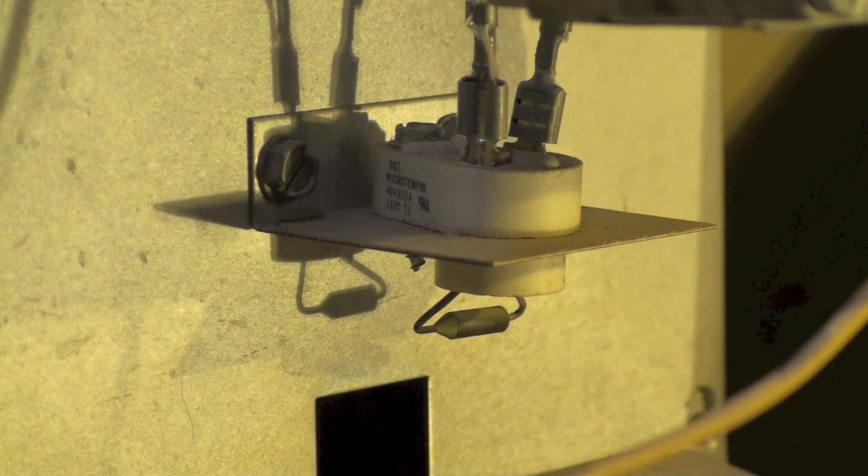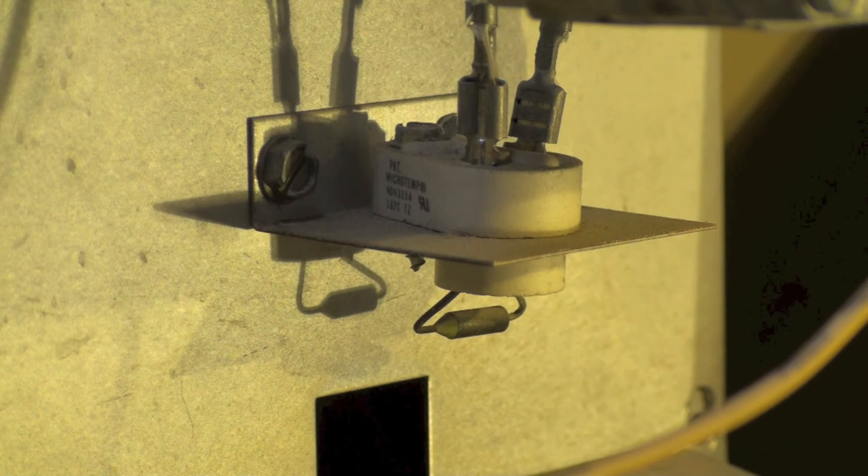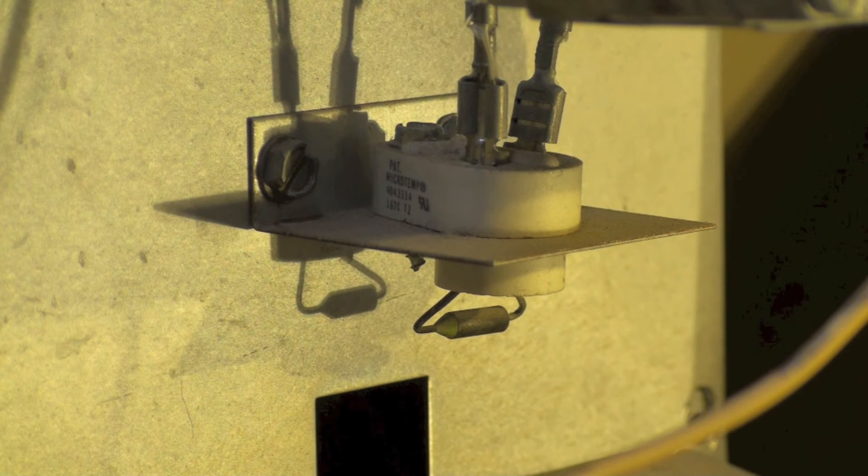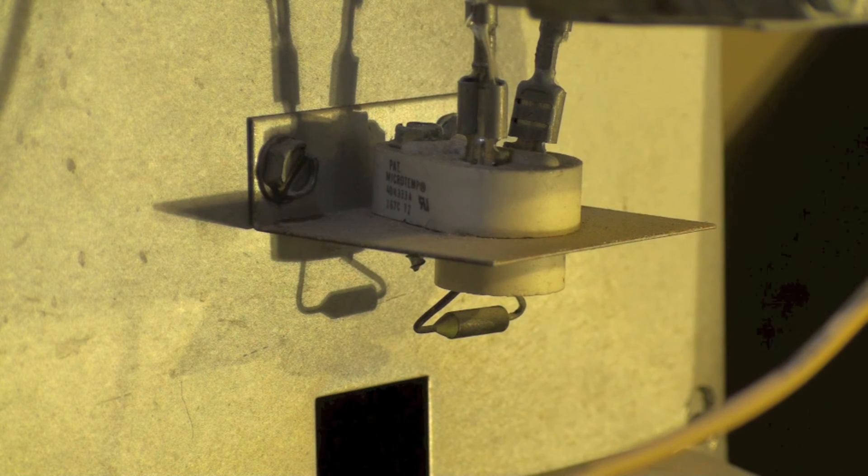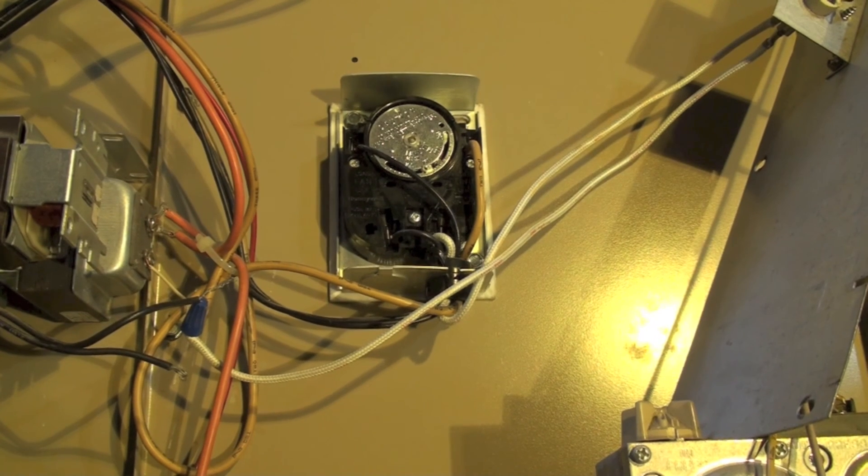That's a high temperature fuse. It gets about 300-some degrees and it will blow. Now it's a one-time fuse, so if it blows, that's time for somebody to come and take a look at this thing because it should not have rolled out flame out the front. So that's how that sequence works.